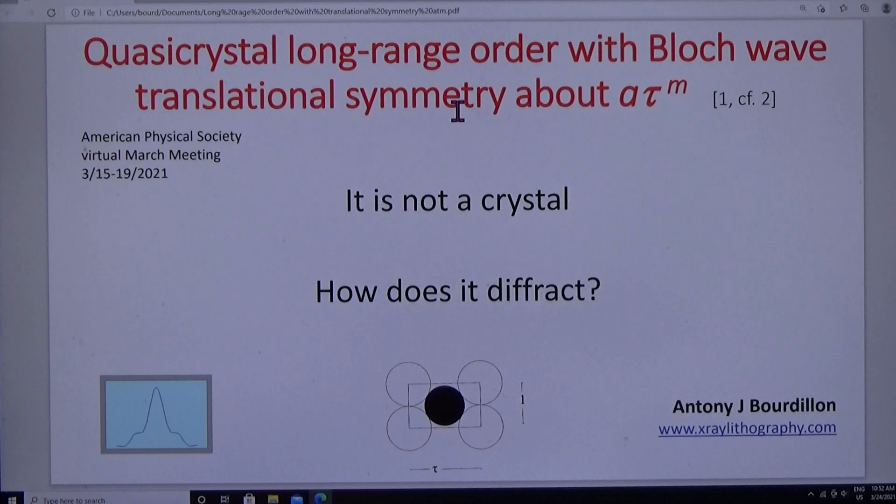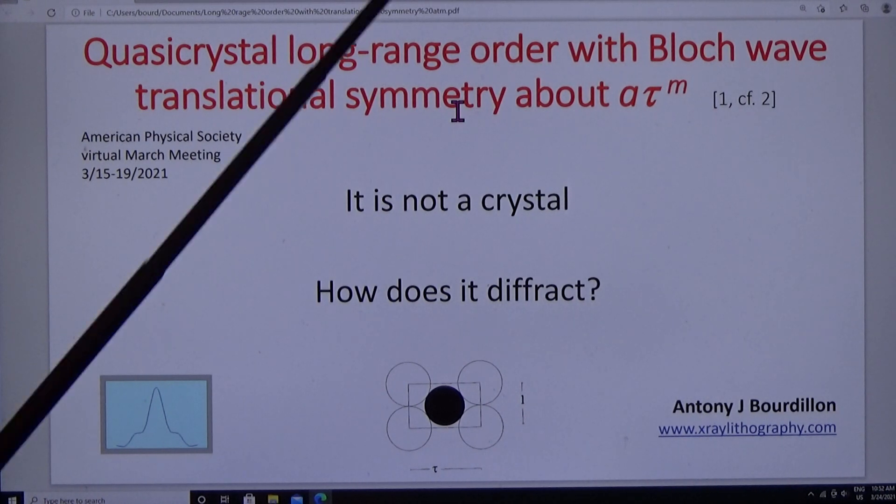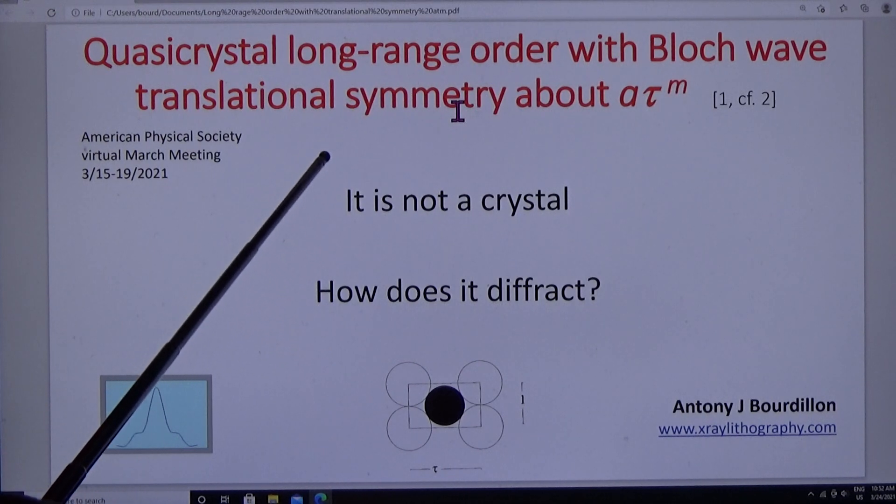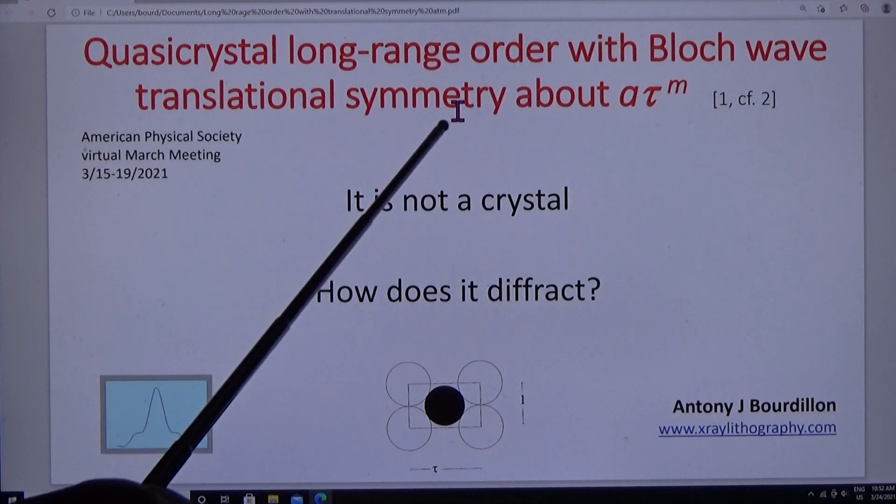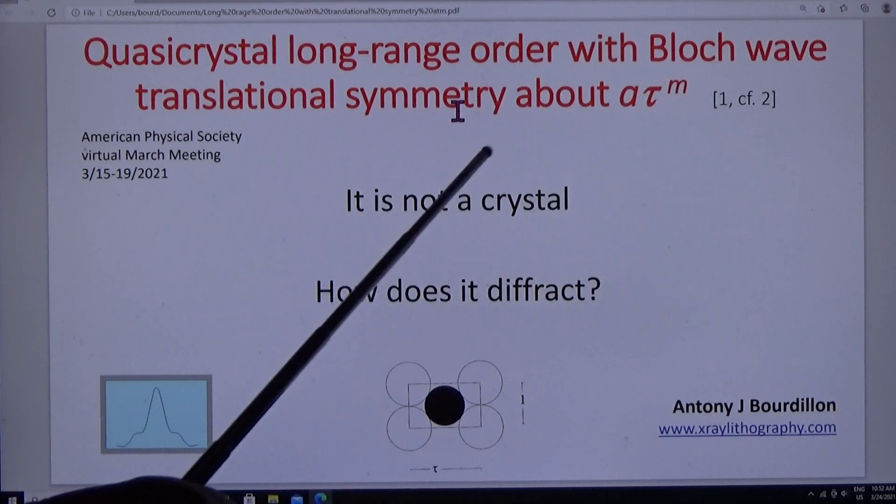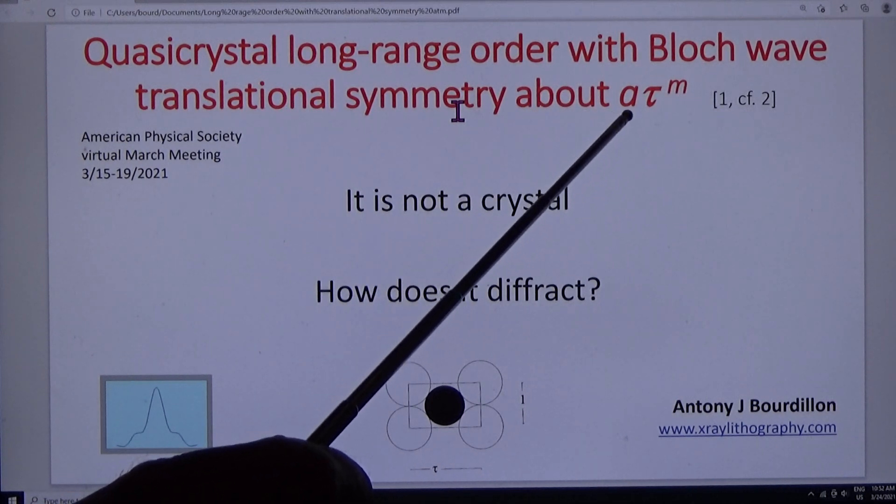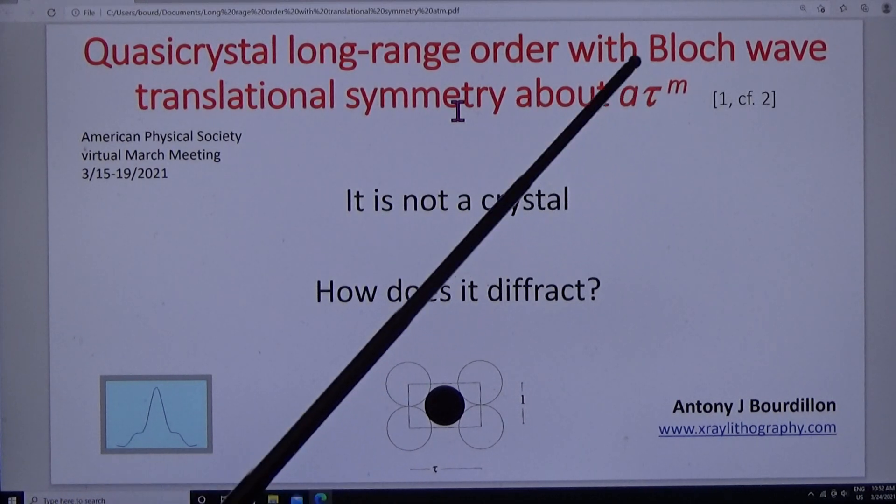This paper was given to the American Physical Society March meeting in 2021. Shetman claimed long-range order with no translational symmetry, but we will demonstrate to you Bloch wave translational symmetry about the lattice parameter multiplied by tau to the power M.